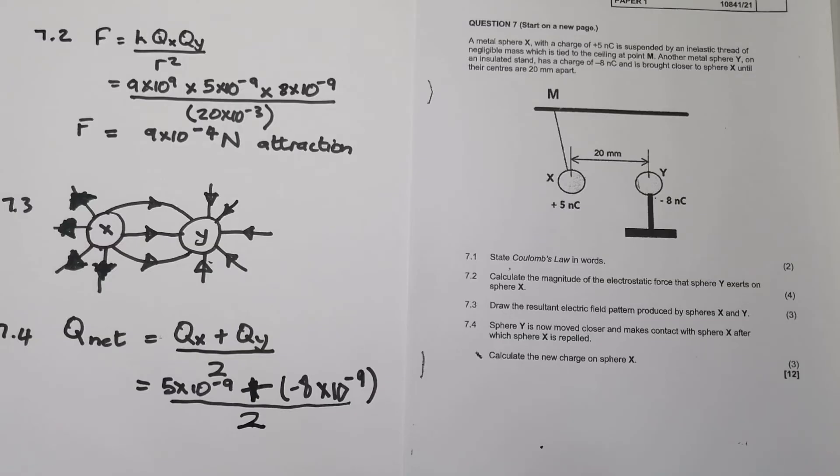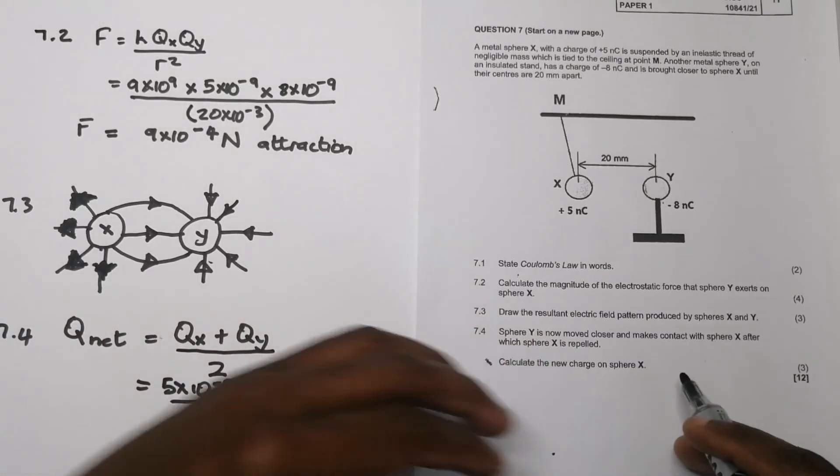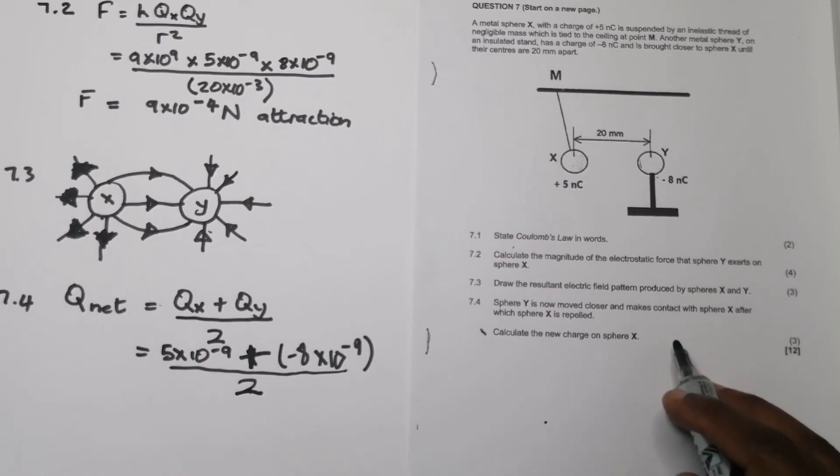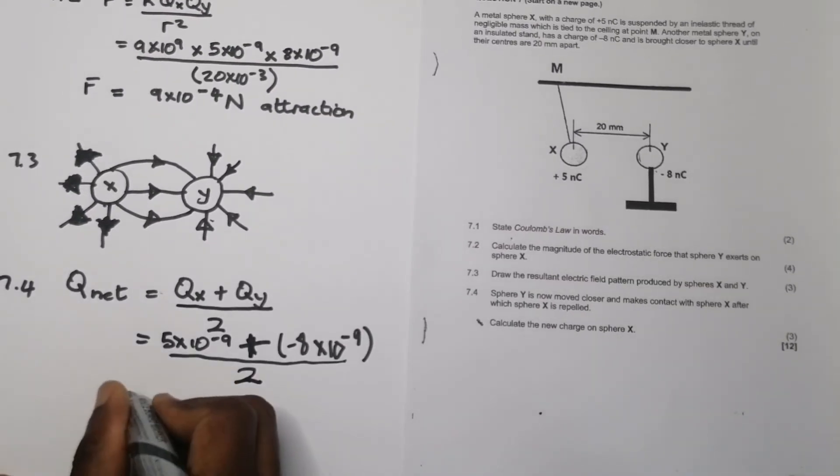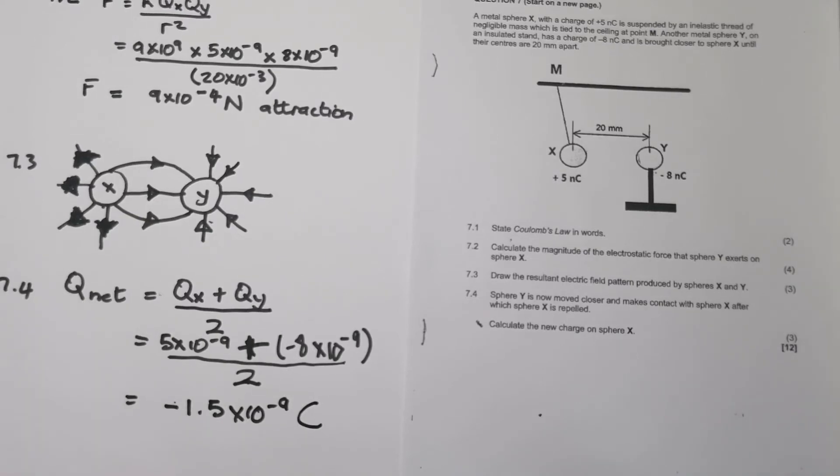So all we need to do is, that's 5 minus 8. The only reason I'm doing that is because I can see that they've got a common factor there. And our answer is 5 minus 8. That would be minus 3 and minus 3 divided by 2, that would be minus 1.5. So it means that the magnitude of the new charge would be minus 1.5 times 10 to the power minus 9 coulombs. So that would be the new charge.